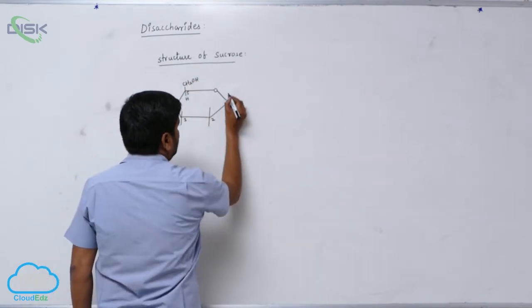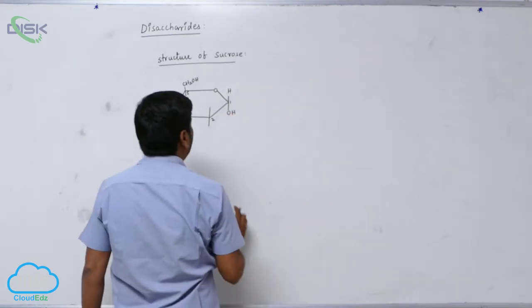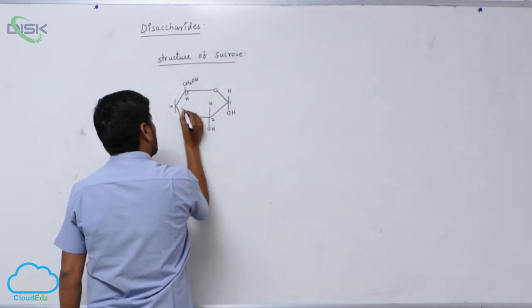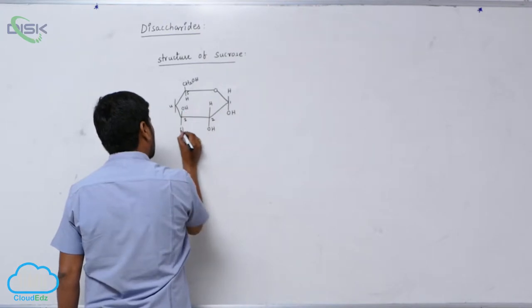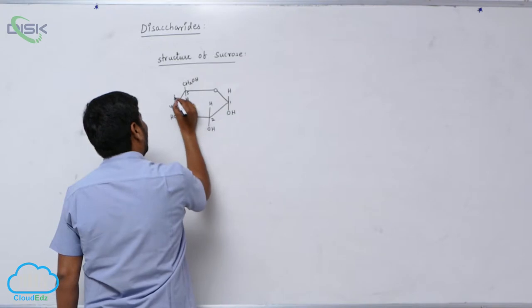There is hydrogen, this is OH. Second carbon OH is also below, third carbon OH is above, fourth carbon OH is right side below, like this.